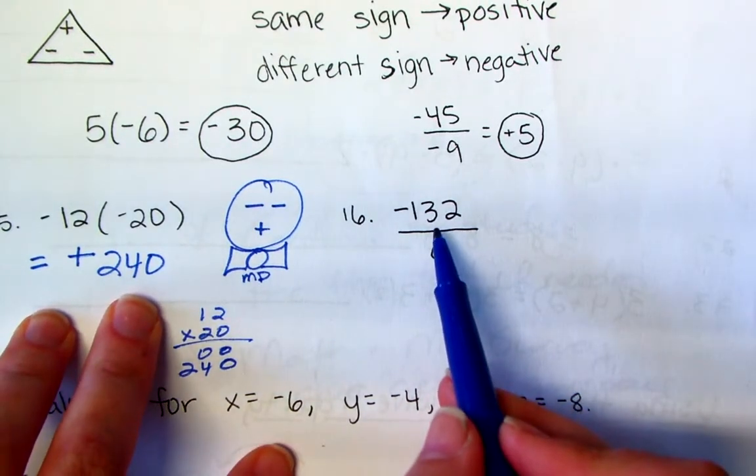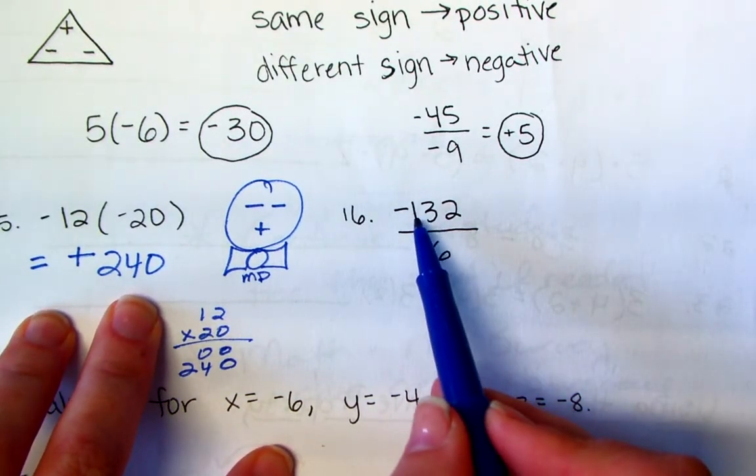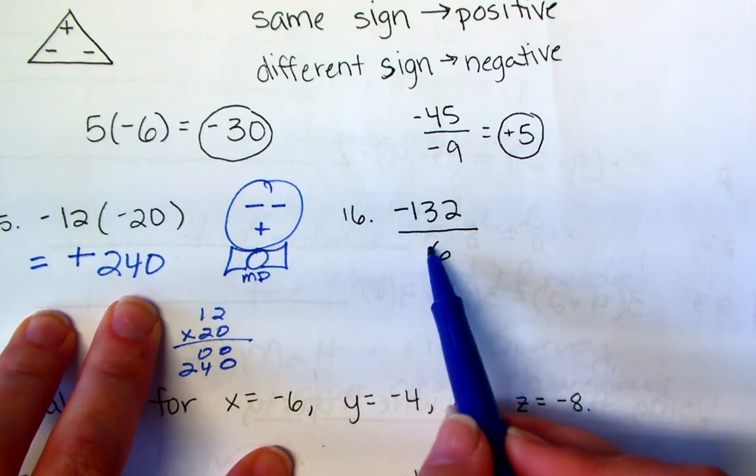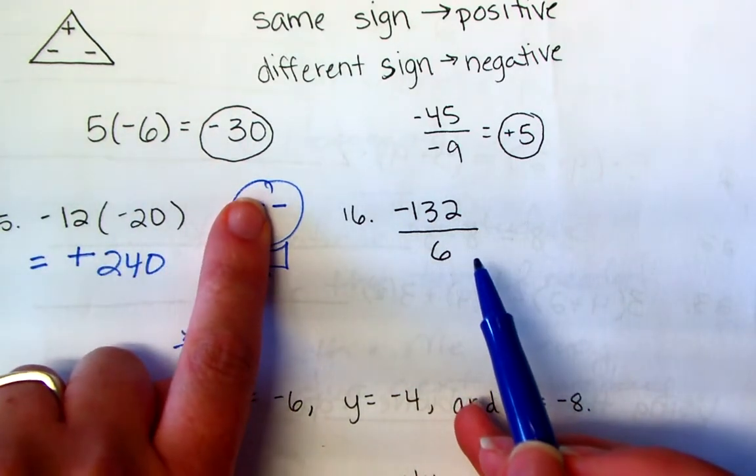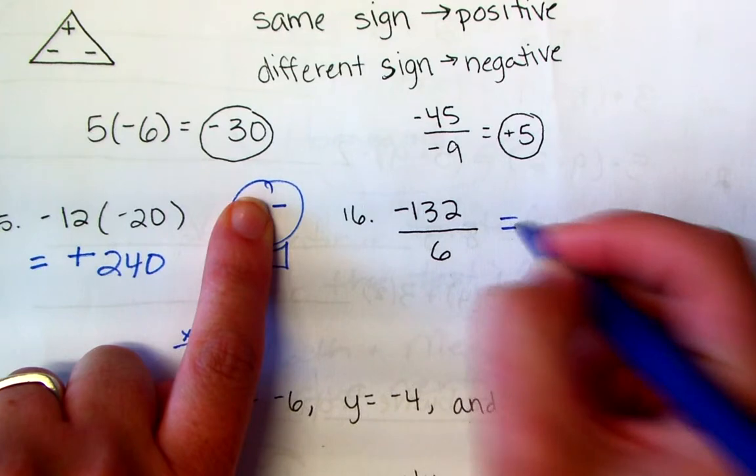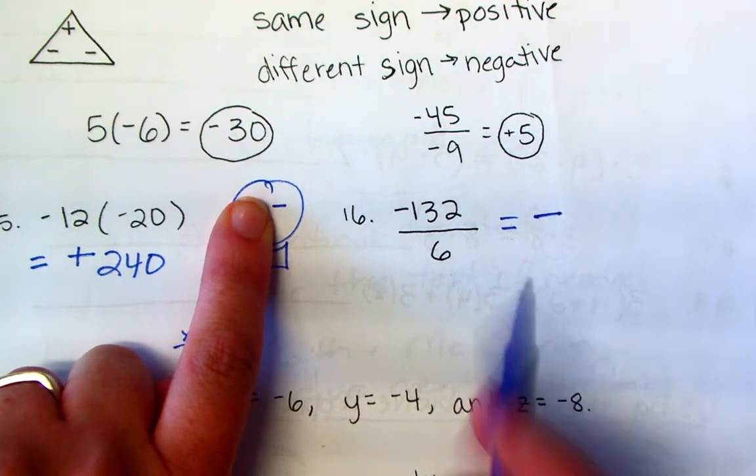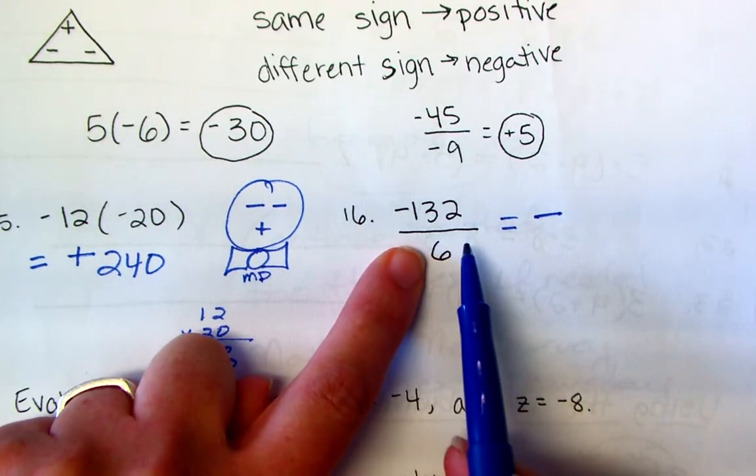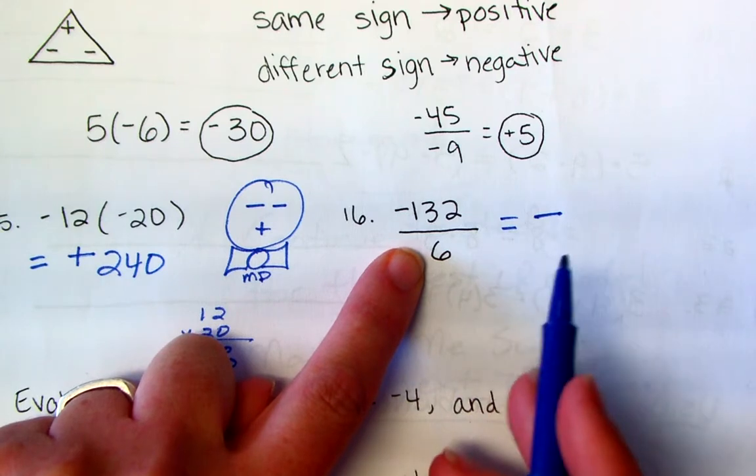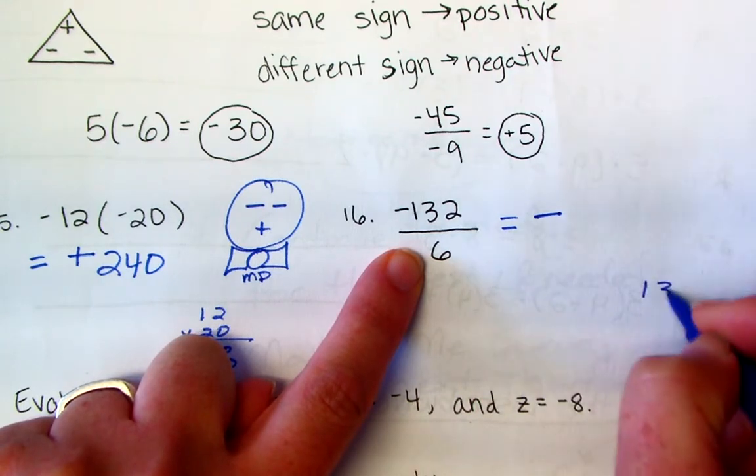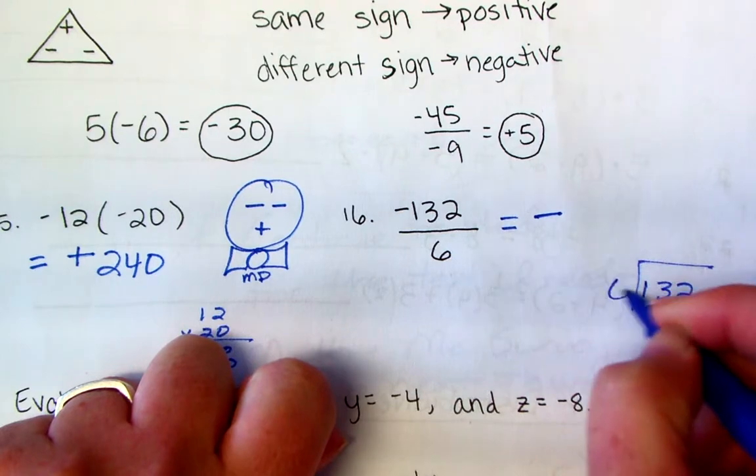So here I need to divide. Again, you're going to use your sleeping integer man. You have a negative and a positive, so I cover up my negative and positive. My final answer is going to be negative. Now I don't just see this right off the bat, so I'm going to do it old school because I'm not lazy. So 132 divided by 6.